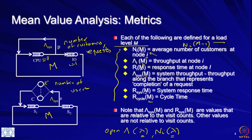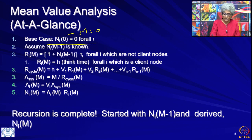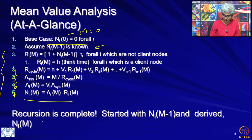Please go through the slides and revise the previous lecture to recall what mean value analysis is. Today we are just going to do examples. This is the MVA recursion itself. The base case is when m equals 0 — no requests in the system — so the average number of customers at each queuing node is 0. We then start the recursion by assuming n_i(m-1) is known, go through all the steps, and derive n_i(m). We start from n_i(m-1) and reach n_i(m) — that is how the recursion is completed.